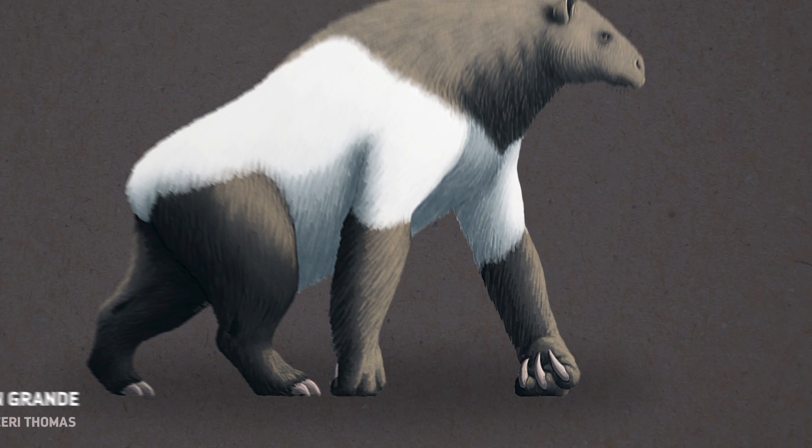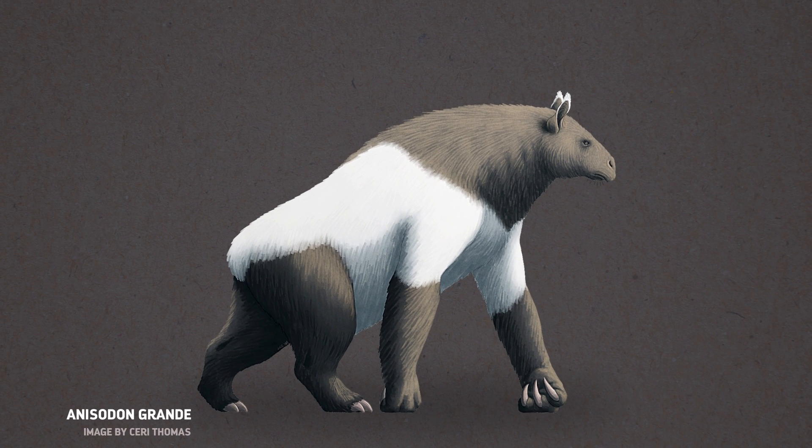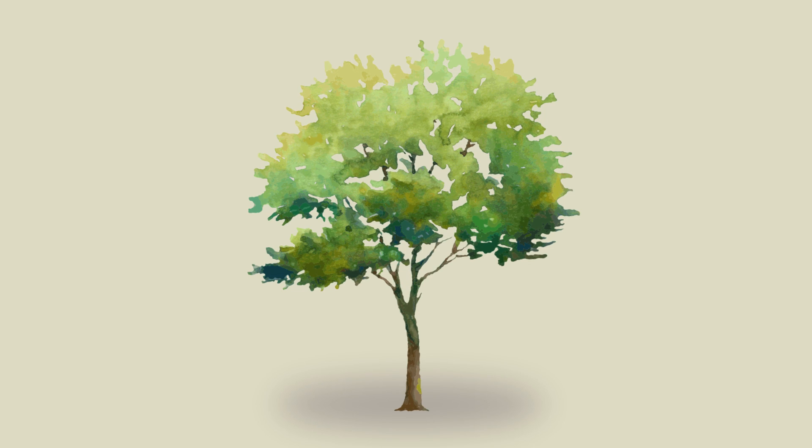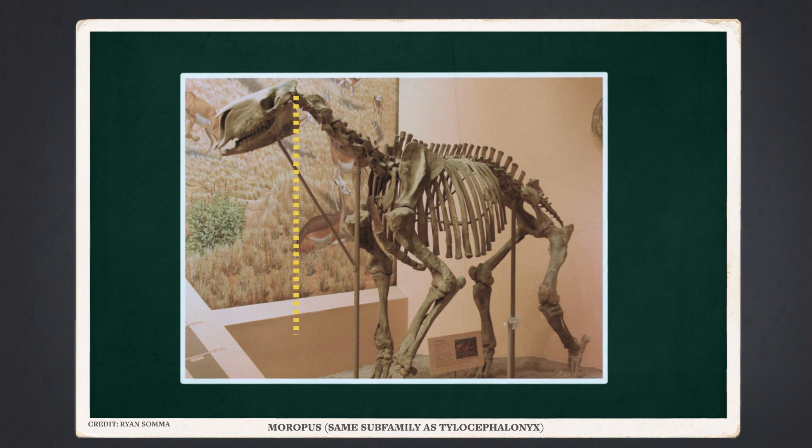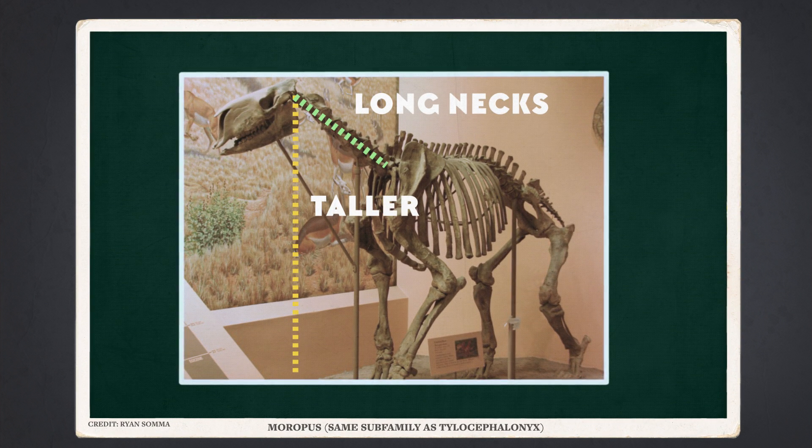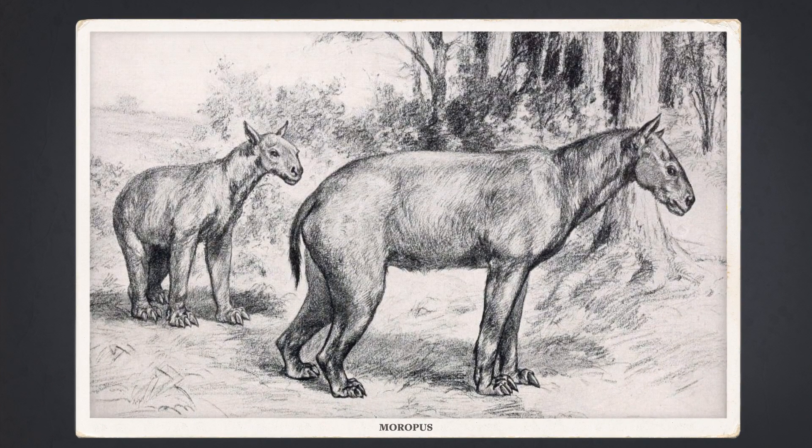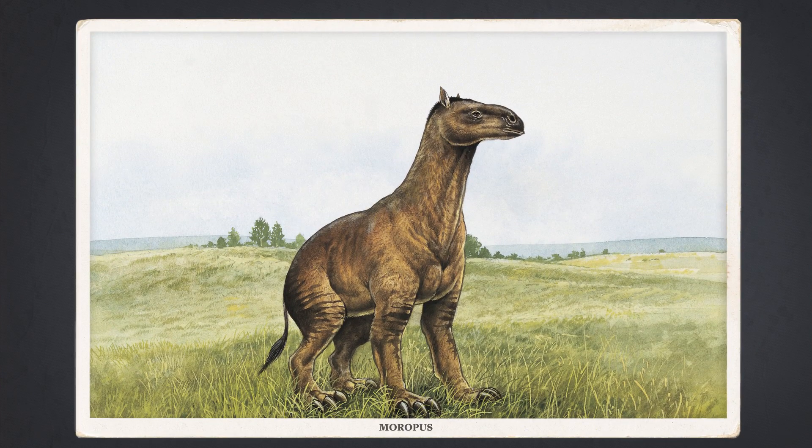These animals became known as their own subfamily of Chalicotheres, called Chalicotheriinae. But meanwhile, a separate group of ancestral Chalicotheres started to develop its own adaptations for high browsing. Its early members were much better at nibbling leaves right off the trees, without having to pull them down. Over time, those that were taller and had longer necks were better at getting food, until eventually, they looked more and more like long-necked horses, or maybe short-necked giraffes.